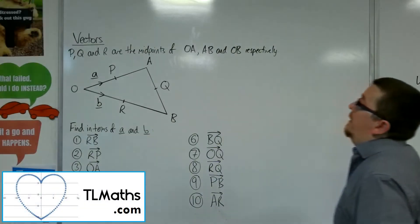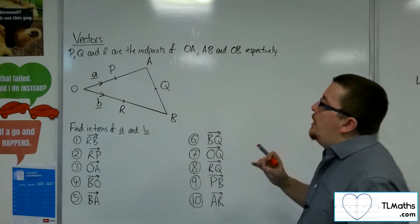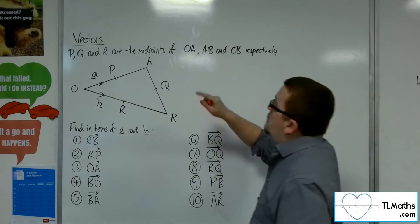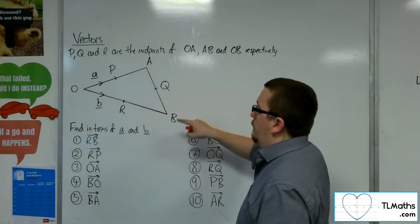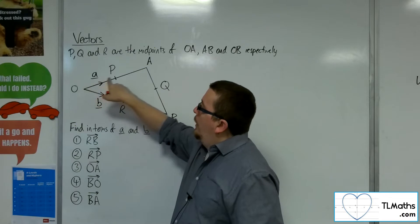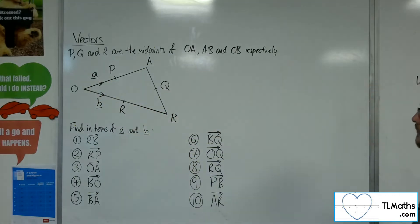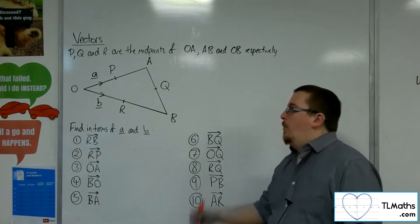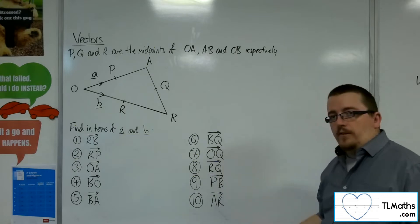Okay, so let's say we've got this diagram here. We've got P, Q, and R are the midpoints of OA, AB, and OB respectively. And we know that the vectors A and B are O to P and O to R respectively. So that's the information we've been given, and what we need to do is find in terms of A and B each of these vectors.